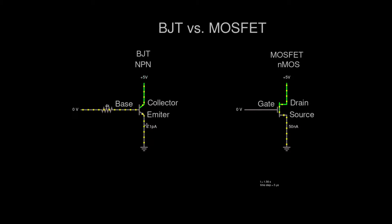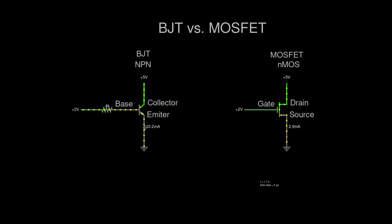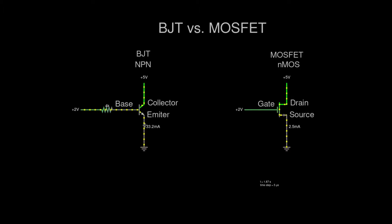When we change the voltage to 2 volts on both sides, we can see that the current passing through the BJT is a lot higher than through the MOSFET. So we can't use a fixed resistor just to make it behave like a MOSFET transistor. But in many cases, resistors are used either in the base or in the emitter lead to prevent shorting the circuit.